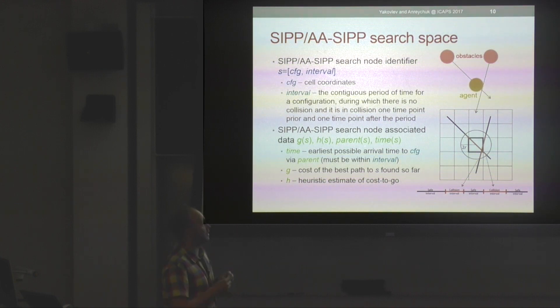Safe interval is the temporal component. We need intervals to take moving obstacles into account, so obviously we do not want our agent to occupy some cell configuration at the moment of time a moving obstacle passes by and hits the agent. What we do is we group the continuous intervals when its configuration is in collision, invert them, and get the safe intervals.